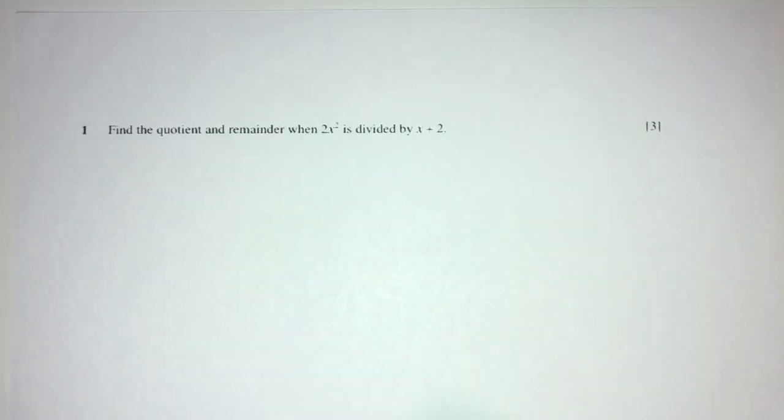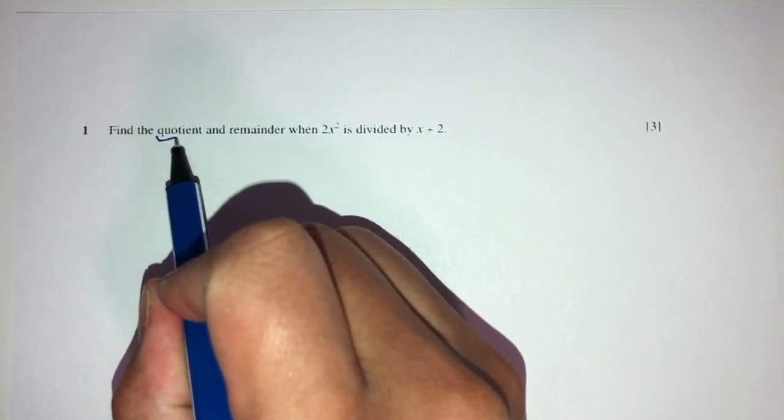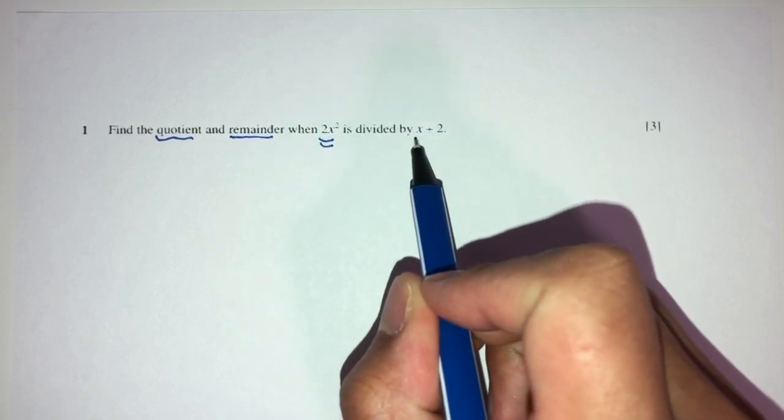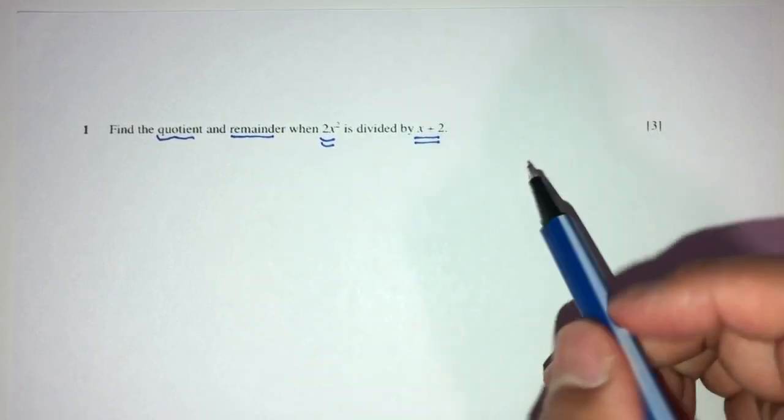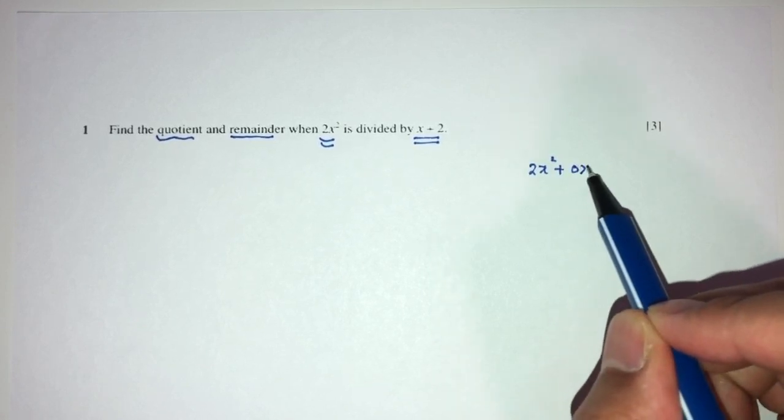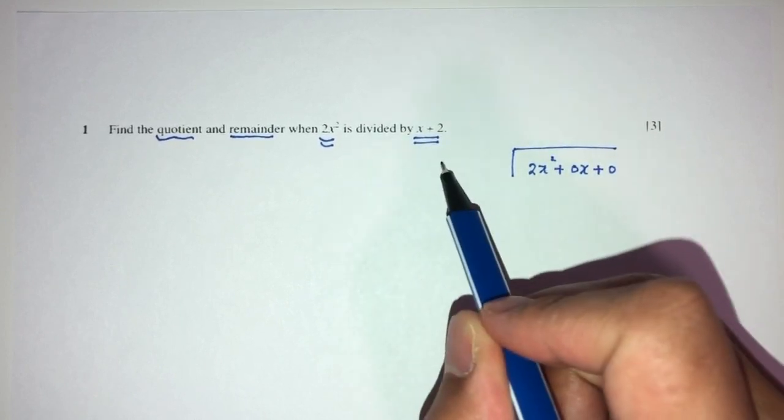So now for question number one, we have to find the quotient and the remainder. We have to find two things, the quotient and the remainder, when this thing right here is divided by this. So, pretty easy, we can perform long division, so that will be 2x squared plus 0x plus 0 divided by this one, which is x plus 2.